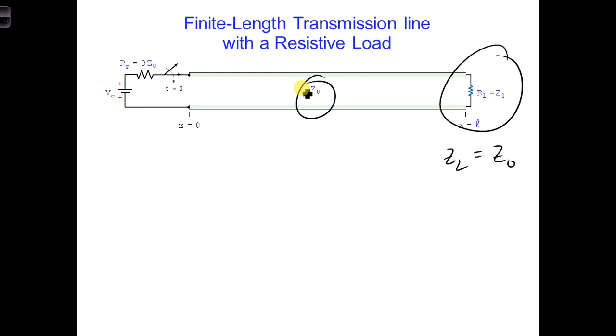at time t equals 0 plus, and these travel down the transmission line towards the load. Their amplitude does not change over the length of the line.